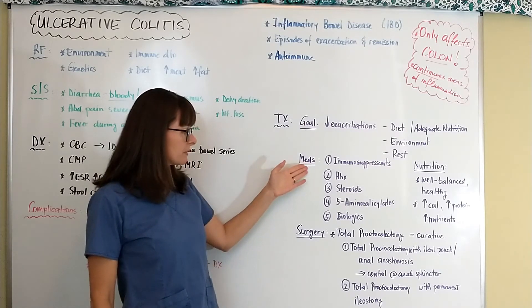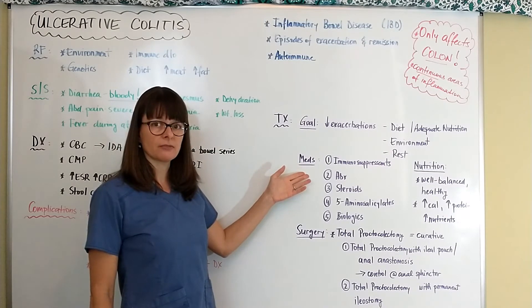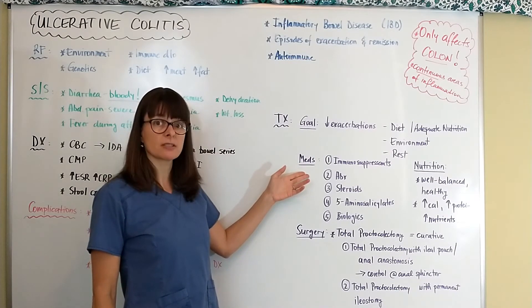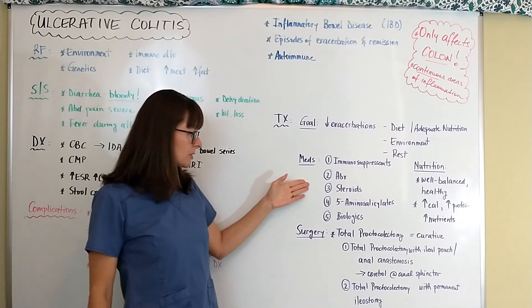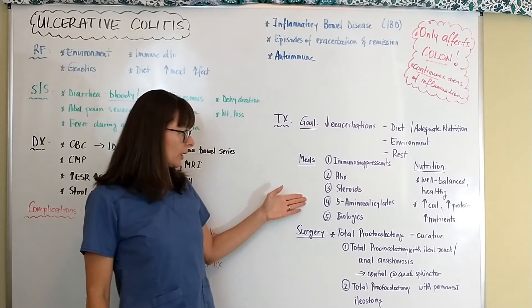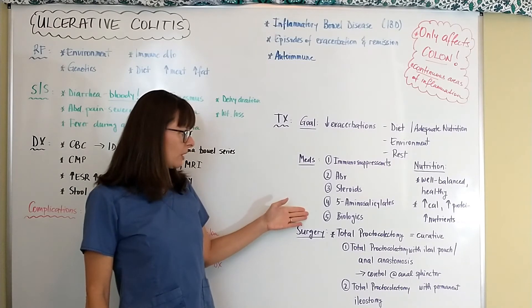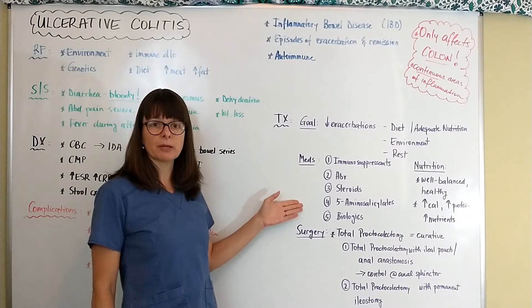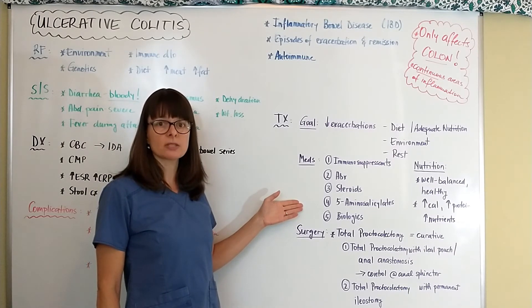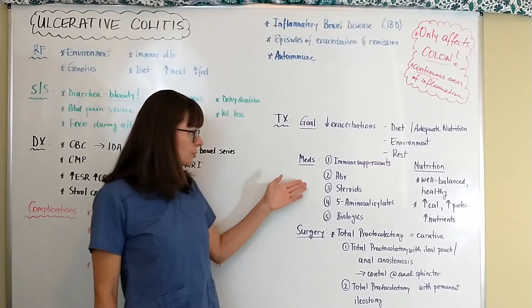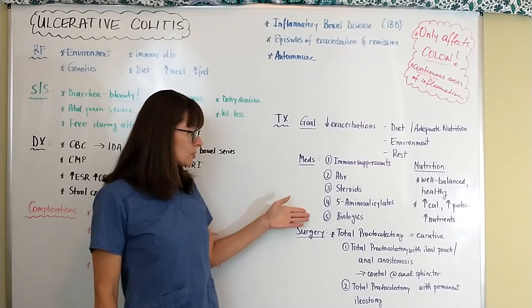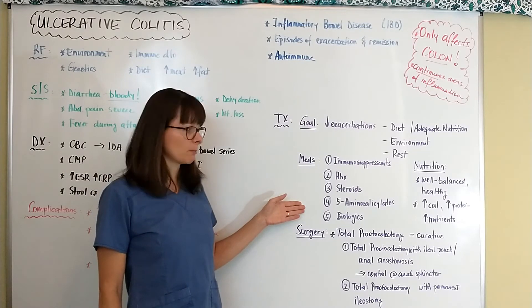Medications are focused on suppressing the immune system because this is an autoimmune disorder. There are five categories of immune drugs that can be used: immunosuppressants, antibiotics (if there is an underlying infection such as C. diff), steroids to decrease the inflammatory response, as well as a drug category called 5-aminosalicylates, and biologics. These more specialized drugs are important to know about, particularly if working in a GI setting.